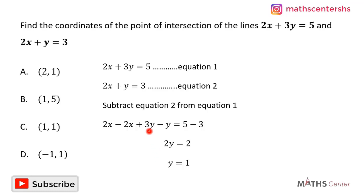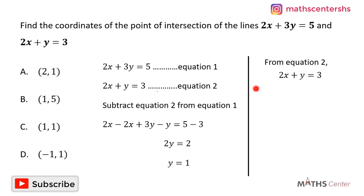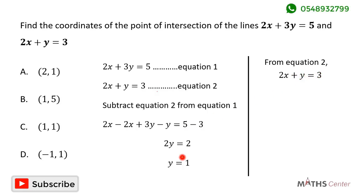The value of y is 1, which means the y-coordinate of the point of intersection is 1. Now let's find the x-coordinate. We can pick any of the equations — I'll pick equation 2. From equation 2, 2x plus y equals 3, and since y is 1, we replace y with 1: 2x plus 1 equals 3.